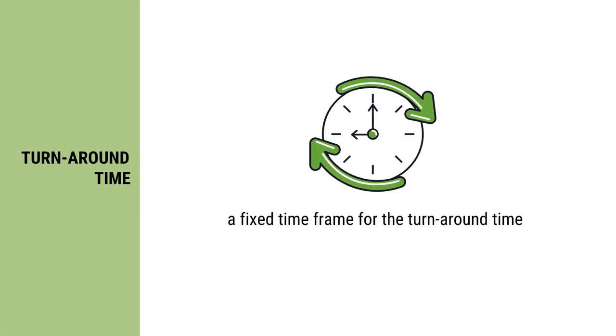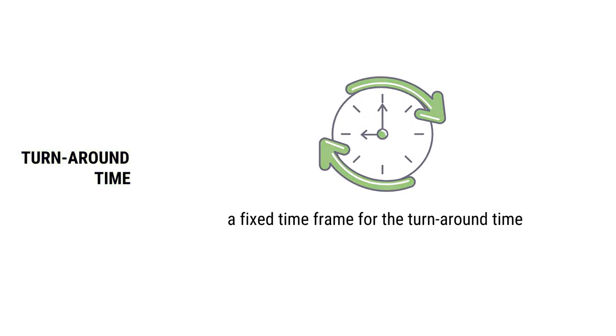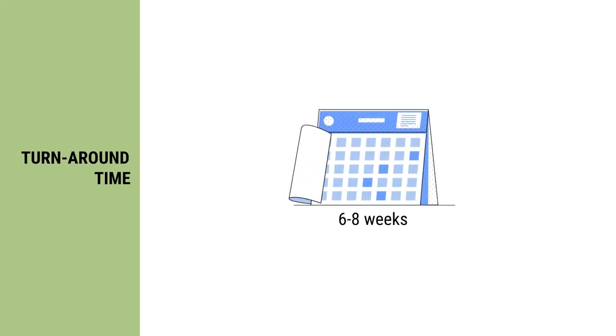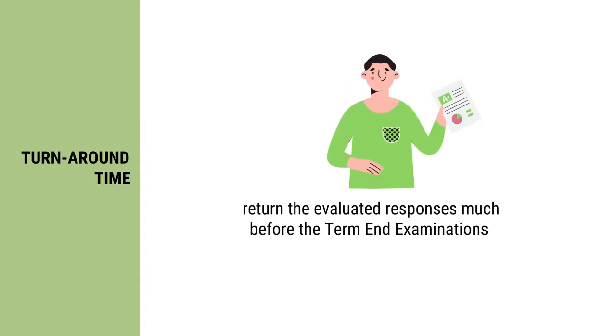The next thing they must keep in mind is the turnaround time. There should be a fixed timeframe for receiving, processing, evaluating and giving the assignment responses back to the learners. This time is called the turnaround time. Ideally, this time is 6 to 8 weeks. The evaluated responses should be given back to the learners well in time before the examinations so that they can go through the comments, identify areas where they need to improve, and prepare accordingly.